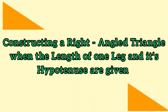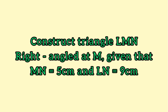Let us consider the following question. Construct triangle LMN right-angled at M given that MN is equal to 5 centimeters and LN is equal to 9 centimeters.